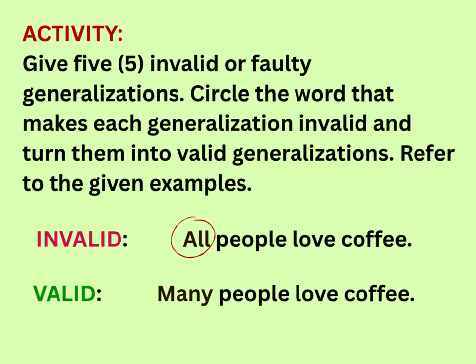Activity: Give five invalid or faulty generalizations. Circle the word that makes each generalization invalid and turn them into valid generalizations. Refer to the given examples.